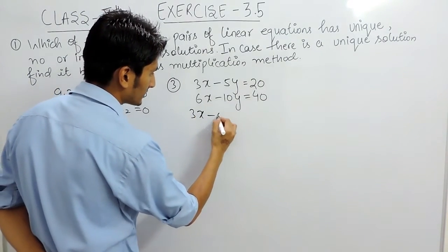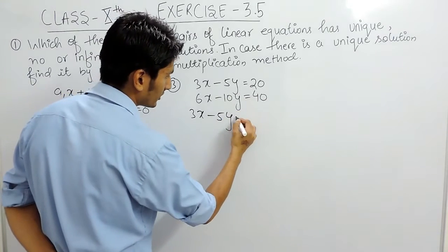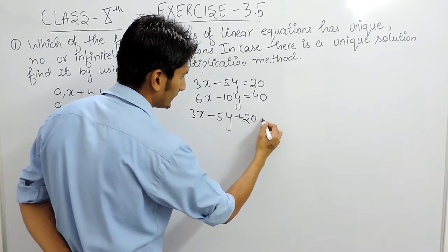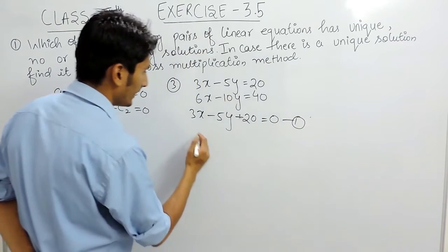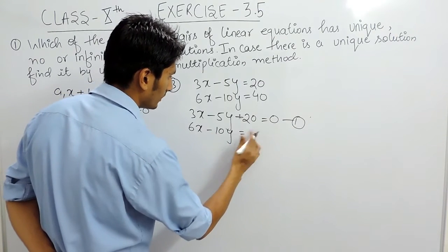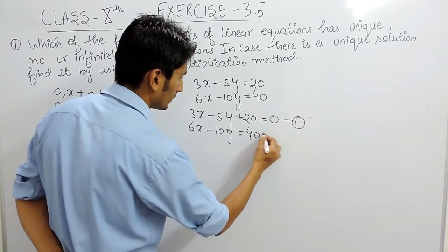This will be 3x minus 5y, and this when shifted to this side will become minus 20 equals to 0. This is our first equation. And this will be 6x minus 10y minus 40 equals to 0. This is our second equation.